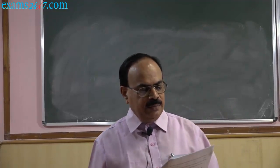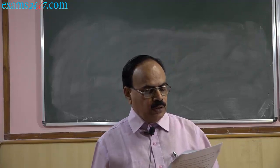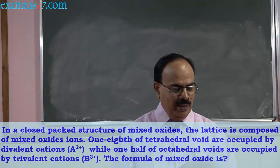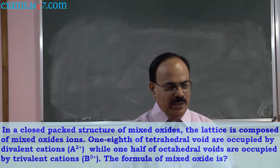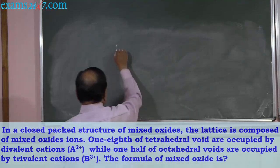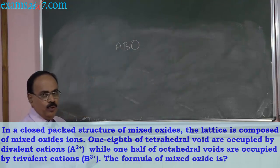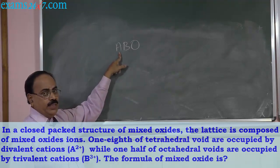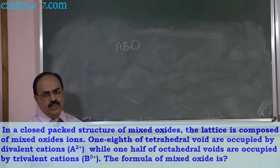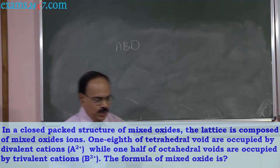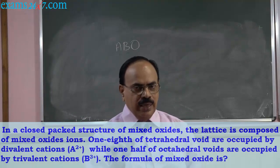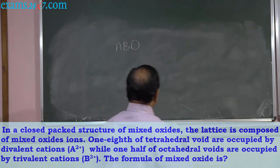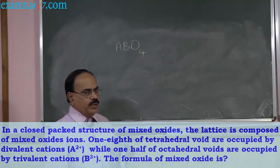In a closed packed structure of mixed oxides, an FCC lattice is composed of oxide ions. While reading, it may seem confusing — many things are given. What is it? It is a closed packing of oxide ions of metal oxides A, B, and O. The formula should be in terms of A, B, and O. Since oxide ions form FCC, there are 4 oxygen atoms in the unit cell.